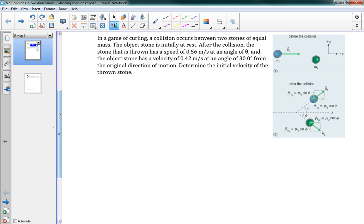We have two problems here. So we'll just get right into them. The first one says, in a game of curling, a collision occurs between two stones of equal mass. The object stone is initially at rest. After the collision, the stone that is thrown has a speed of 0.56 meters per second at an angle of theta. And the object stone has a velocity of 0.42 meters per second at an angle of 30 degrees from the original direction of motion. We want to determine the initial velocity of the thrown stone.